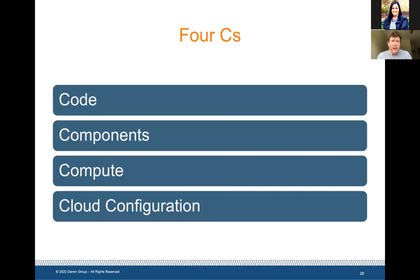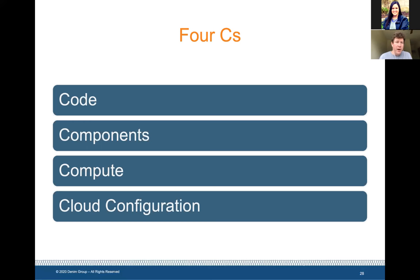Now we look at the Four C's. First: Code — the code that you write, your business logic and the stuff you use to glue things together. This is the traditional focus of OWASP and application security. You use static analysis, dynamic analysis, or IAST — embedding something in the running application to get benefits of both static and dynamic testing. This is also where you typically do manual penetration testing and code review to look for those business logic issues that automated scanners are powerless to find.